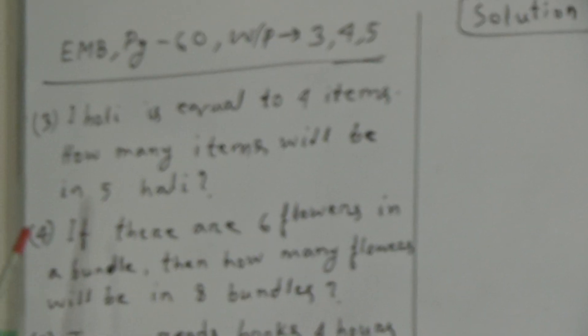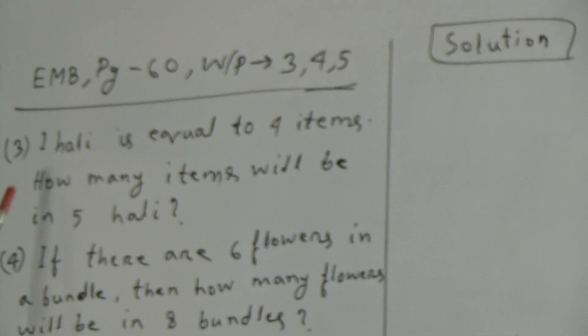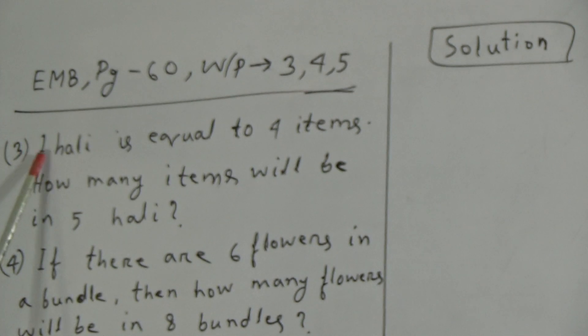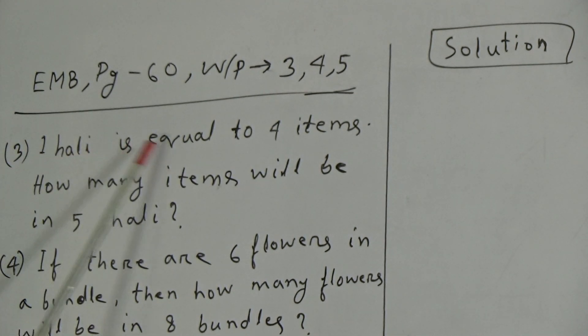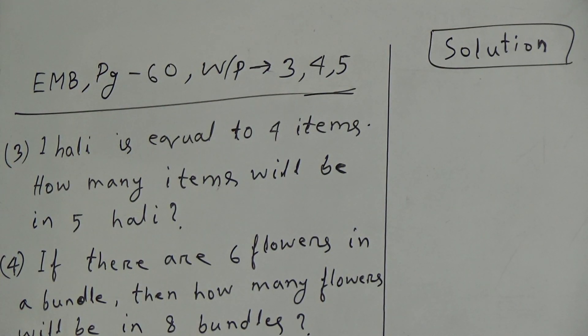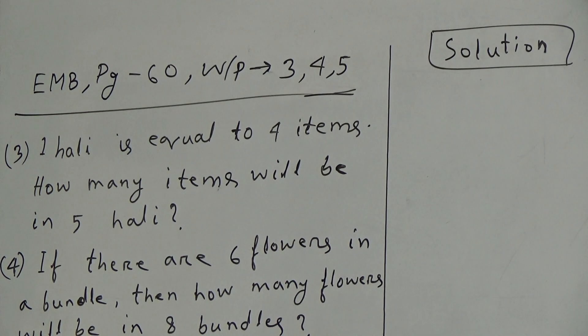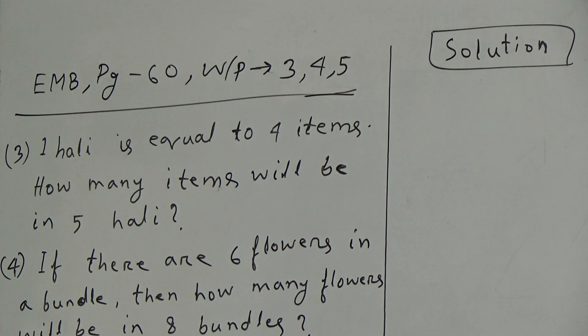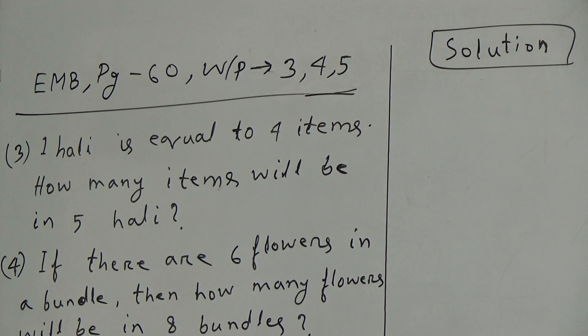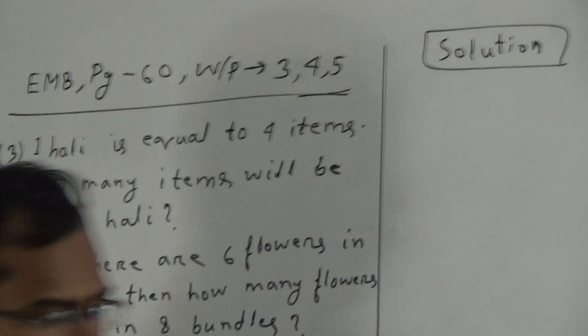Here, we will solve question number three first. The question is: one Hally is equal to four items. How many items will be in five Hally? Given that one Hally equals four items, we have to find out how many items will be in five Hally.